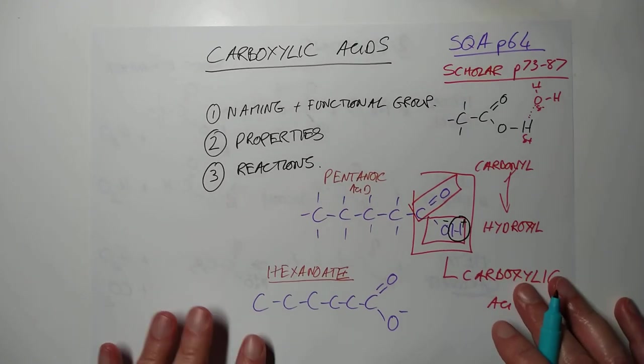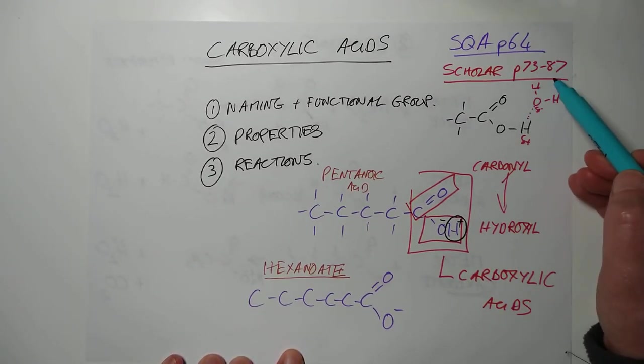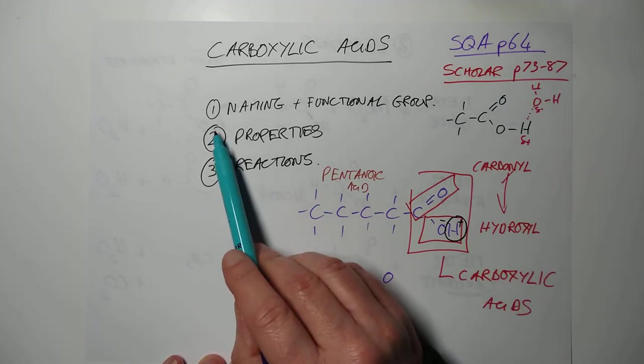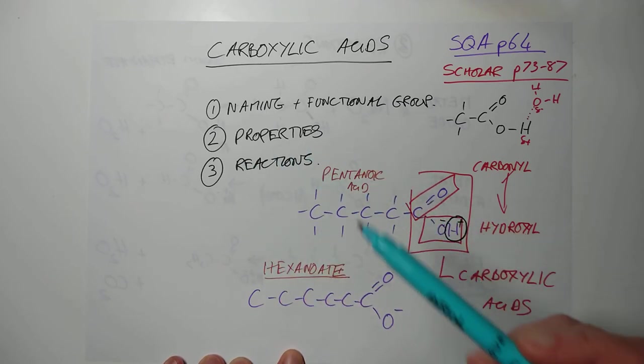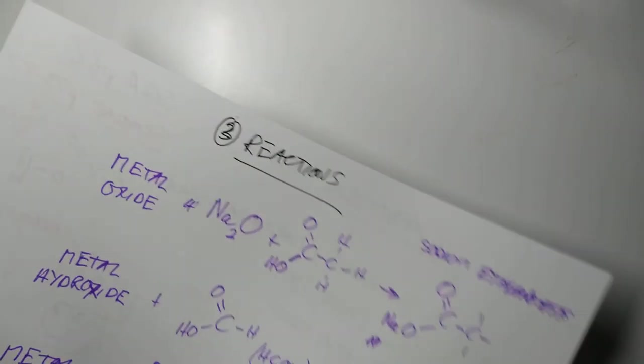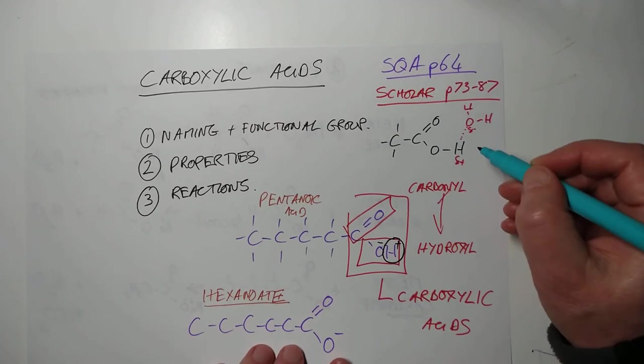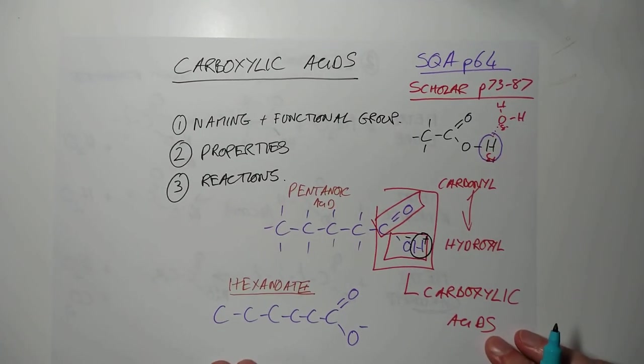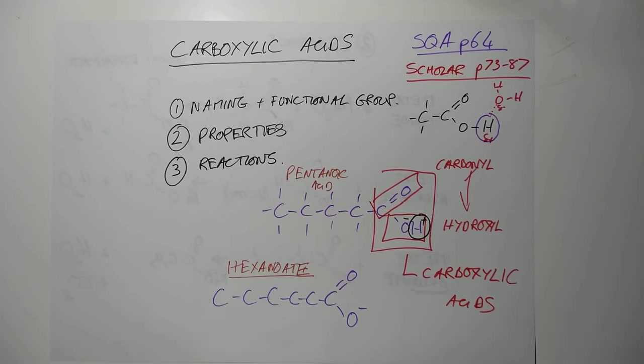Very quick recap. I wanted to go over carboxylic acids. SQA, page 64, by the way. Scholar, the PDF, if you're working from that. It's quite good, the Scholar PDF. Pages 73 to 87. Naming them, properties of them, and their reactions. Can I remind you that that hydrogen there is the one that clears off into the water to form the acids and leaves a carboxylate ion behind it. Thanks for listening. Bye-bye.